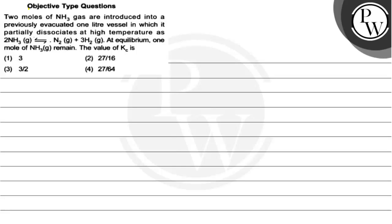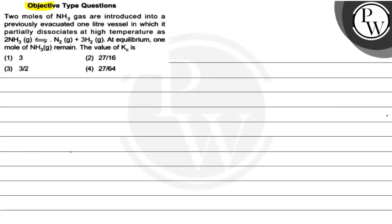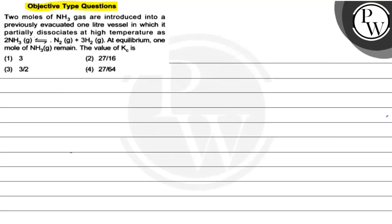Hello Bacho. Let us read the question first. Objective type questions: Two moles of NH3 gas are introduced into a previously evacuated one liter vessel in which it partially dissociates at high temperature as 2NH3(g) giving rise to N2 gas and 3H2 gas. At equilibrium, one mole of NH3 gas remains. The value of Kc is?